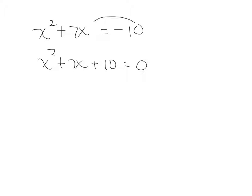This one could be factored because there are factors of 10, 5 times 2, that give you 7. So you set each factor equal to 0, and then you had two little mini linear equations that you solved.